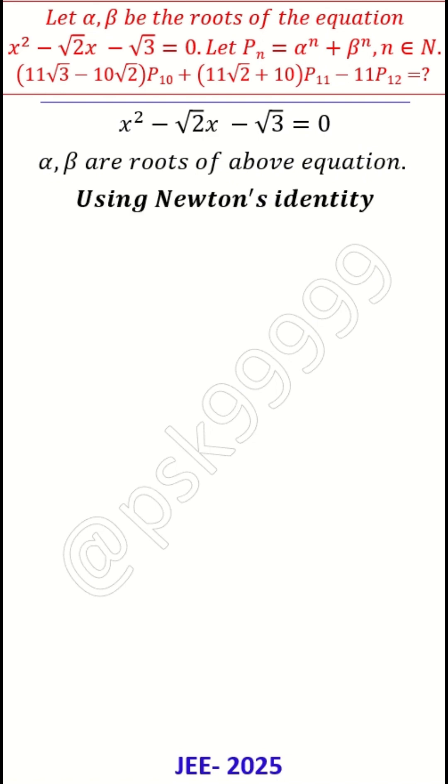First, let us use Newton's identity accordingly. This is the general identity: P_{n+2} - √2P_{n+1} - √3P_n = 0. We use it accordingly.